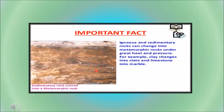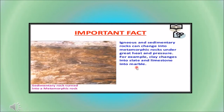Here we are with the third type of rock: metamorphic rock. The igneous and sedimentary rocks can change into metamorphic rocks under great heat and pressure. For example, clay changes into slate, and limestone changes into marble. So slate and marble are examples of metamorphic rock.